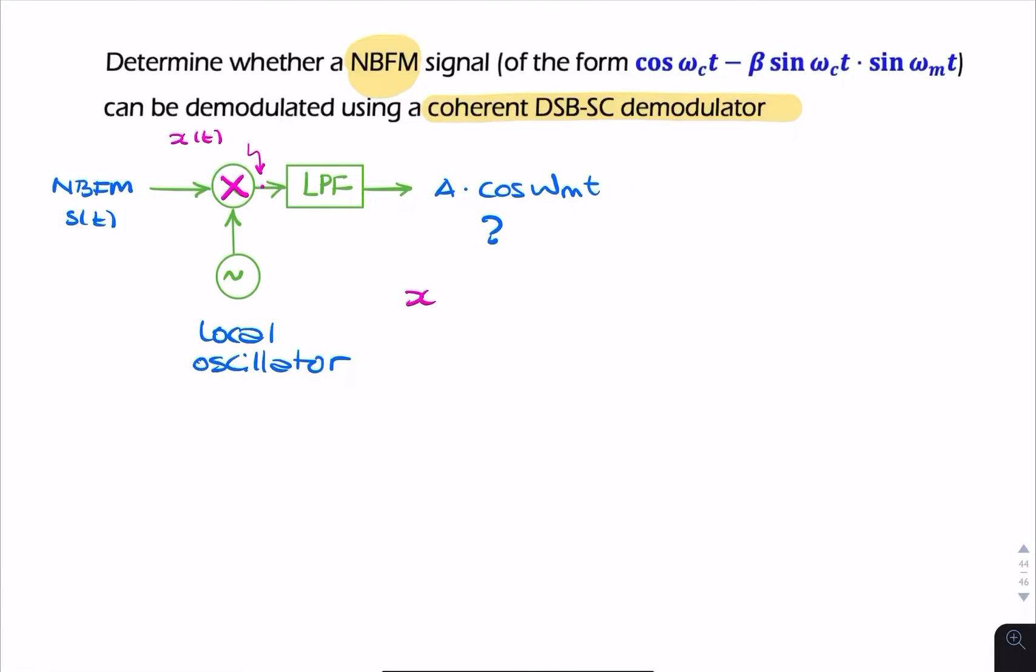So x(t) is simply S(t) multiplied by my local oscillator. Now, I could say cosine ωct, but it looks like my sideband is out of phase with the carrier. There's a 90 degrees phase shift, so I shouldn't really be using cosine. I should be using sine. So let's put sine ωct as my local oscillator.